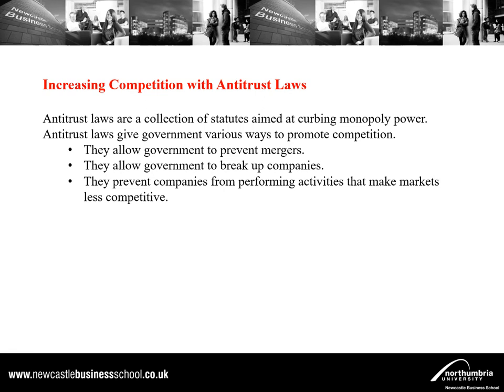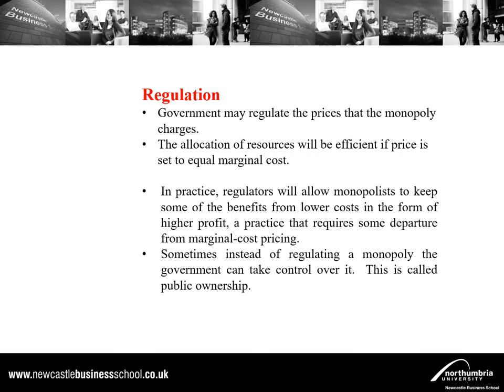Antitrust laws allow a government to prevent mergers — for example, if two producers in a market merge, there is only one left, creating a monopoly. They can also allow government to break up companies to prevent monopoly, splitting them into parts that ideally begin competing. They also prevent companies from performing activities that make markets less competitive. Government can regulate the prices a monopoly charges. One potential solution is to set price equal to marginal cost, which would make resource allocation efficient.